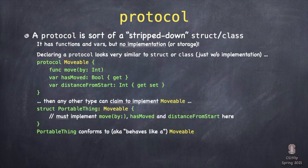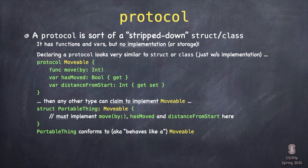Once you declare a protocol like this, other structs, classes, and enums can essentially sign up to implement that protocol. Here I've got PortableThing, which is signing up to implement the Movable protocol. You've actually seen this multiple times. I might have said PortableThing behaves like a Movable, or PortableThing conforms to the Movable protocol, or even PortableThing is a Movable. All these are just terms for the same thing: PortableThing is agreeing to implement all the vars and funcs in the Movable protocol.